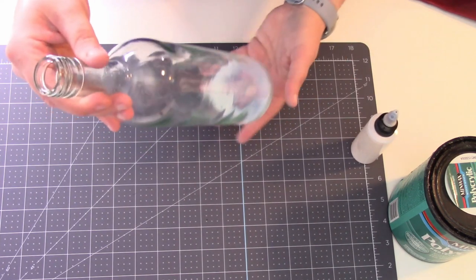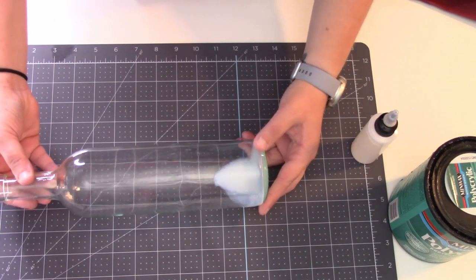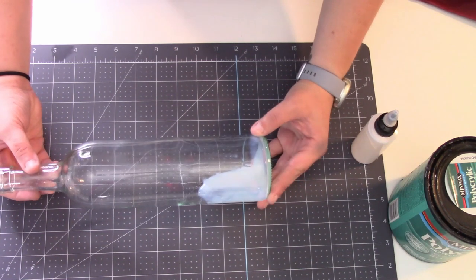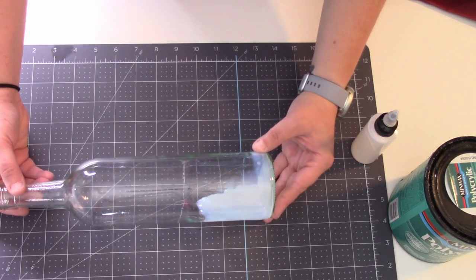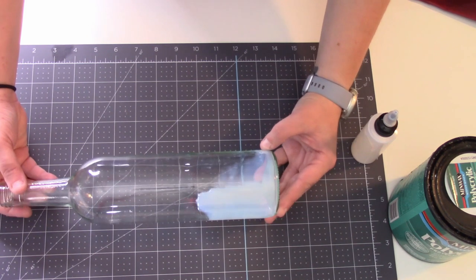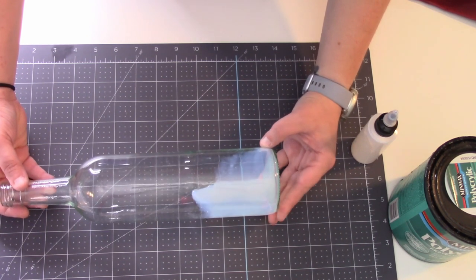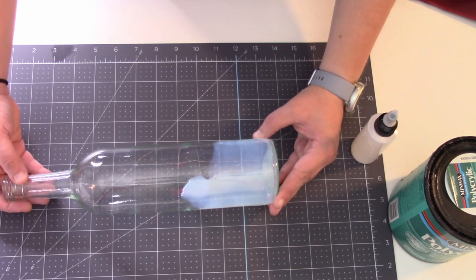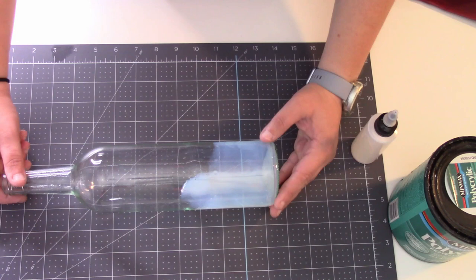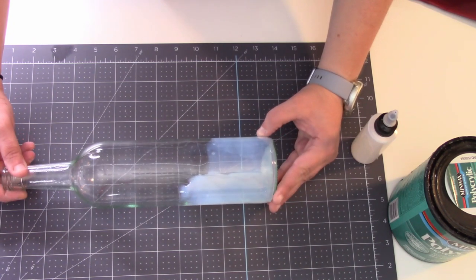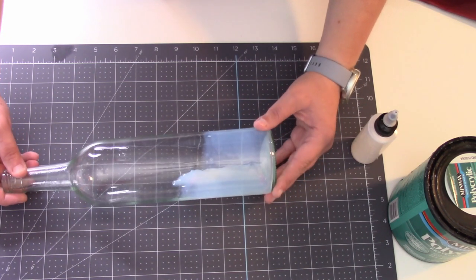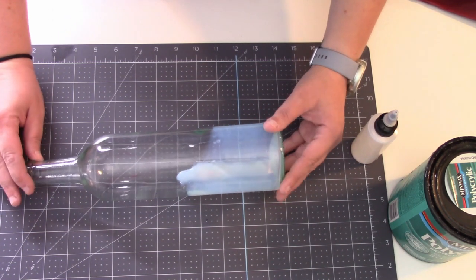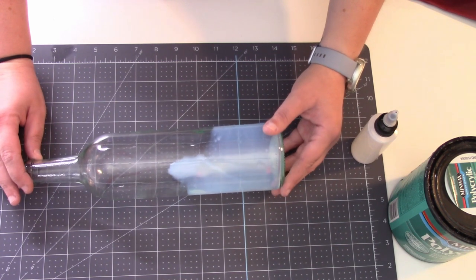Just like when you do Christmas ornaments, you are going to swirl this polycrylic around. You want to make sure that you do it fairly slowly and you want to cover the entire bottle. You can let it sit like this for a moment or two just to get some of that polycrylic to pool a little bit more.